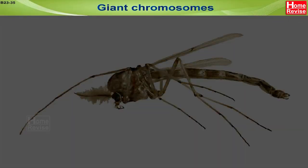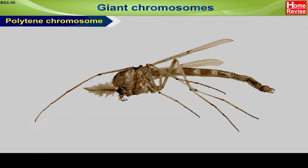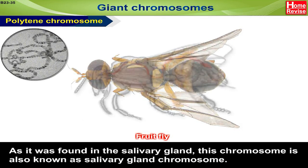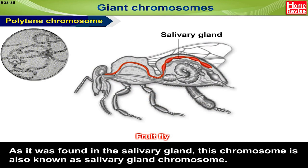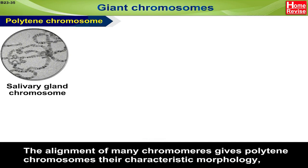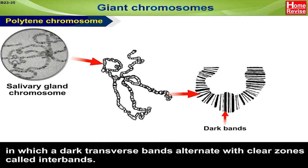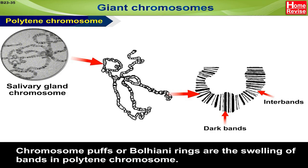Giant Chromosomes — Polytene chromosomes: Polytene chromosomes were observed by the Italian scientist Balbiani in a dipteran insect, Chironomus. They were also found in fruit fly. As they were found in the salivary gland, these chromosomes are also known as salivary gland chromosomes. The alignment of many chromomeres gives polytene chromosomes their characteristic morphology, in which dark transverse bands alternate with clear zones called interbands.